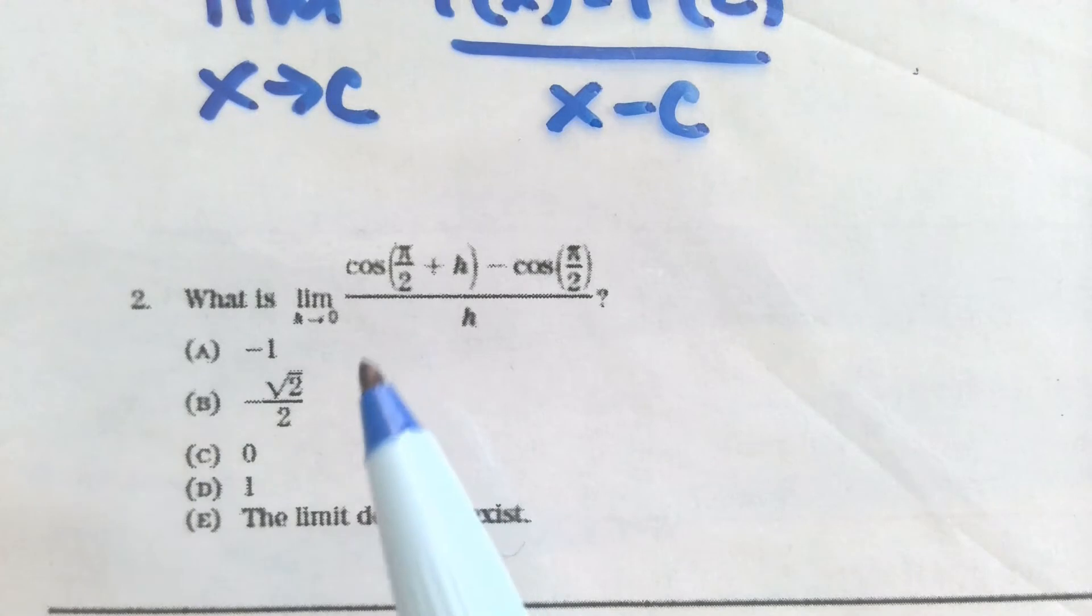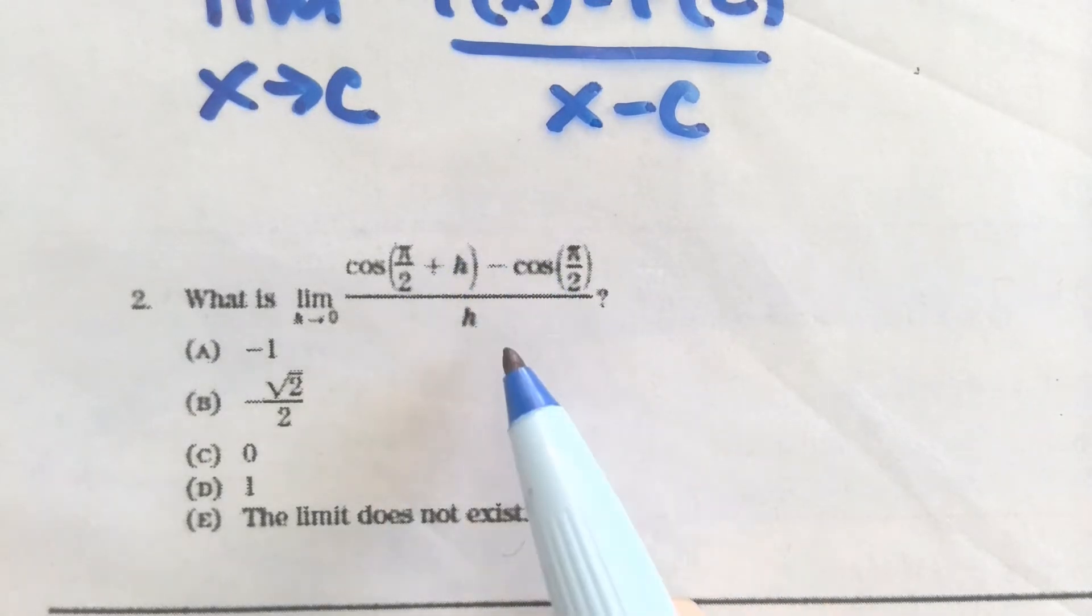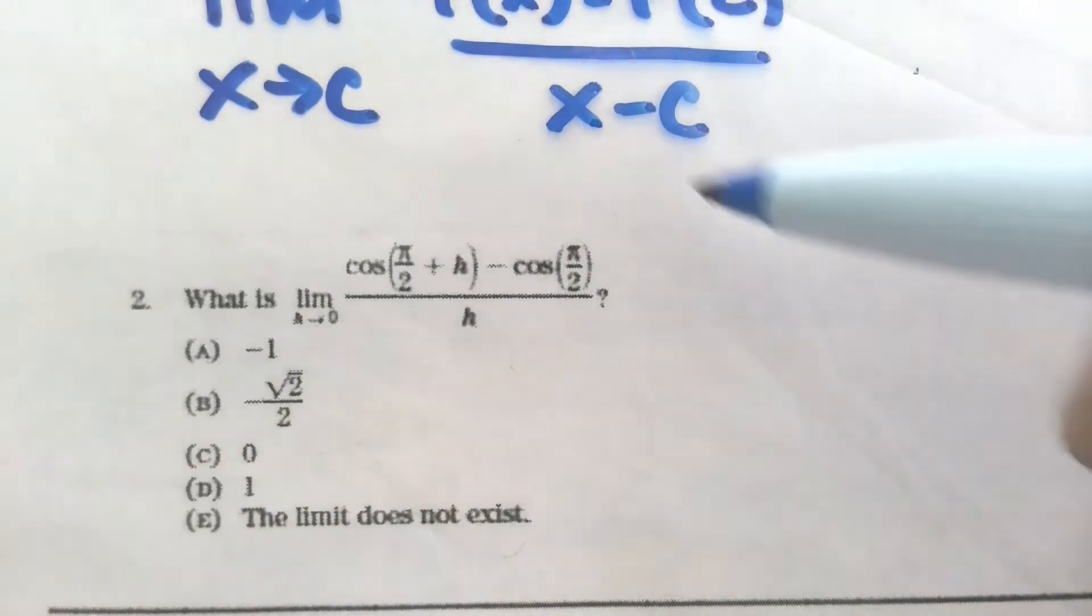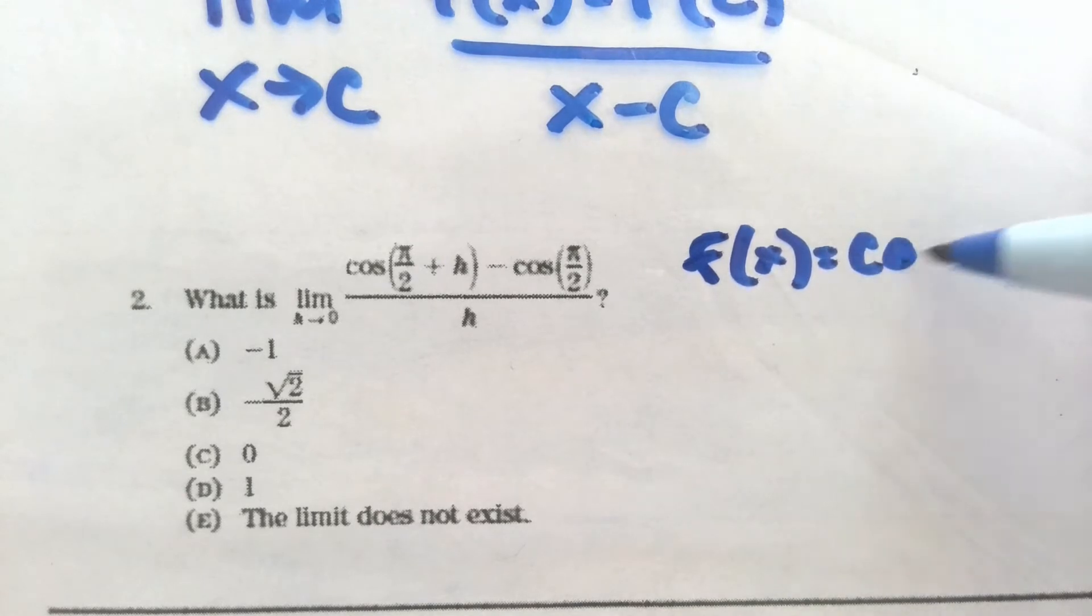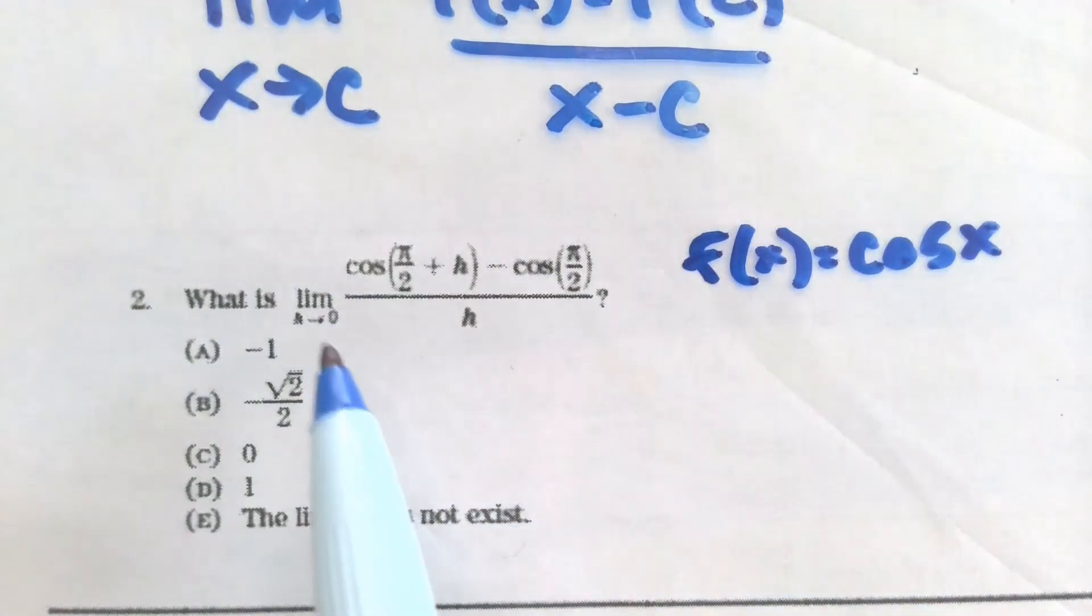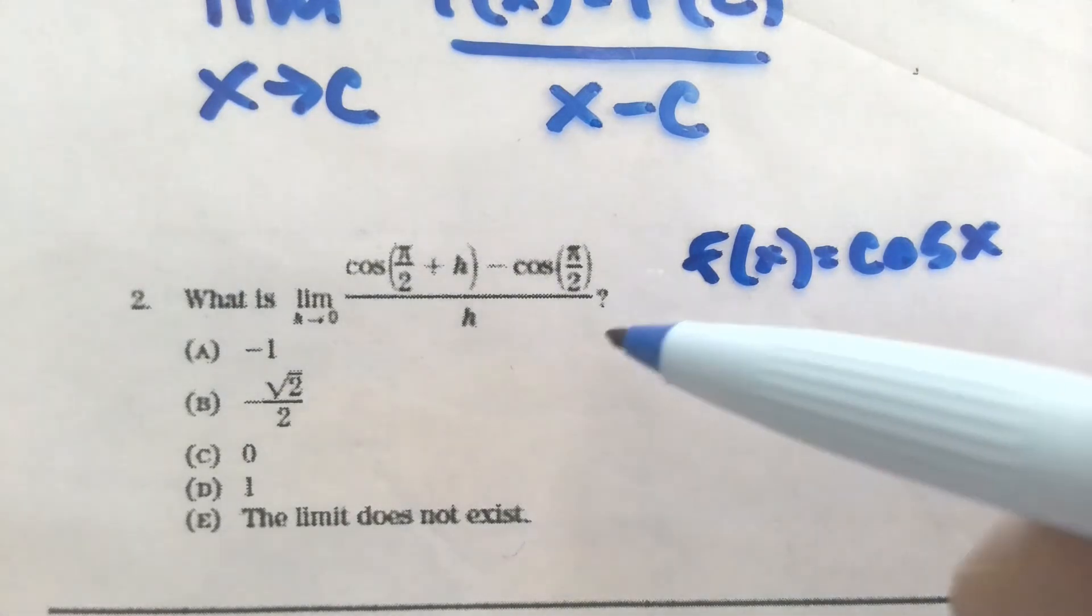If we can just recognize the part of this difference quotient that is the derivative, we can sidestep actually simplifying this and just find the derivative. Because they've got cosine, and this is our f of x part, so our f of x is cosine, and they're trying to find the derivative of cosine at the value pi over 2.